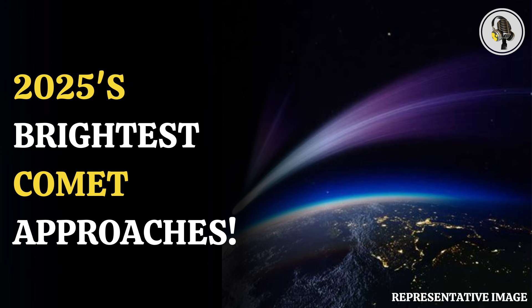In 2024, when Comet A3 travelled to the inside of the solar system, it was spotted by several stargazers in both the southern and northern hemispheres. Comet G3 is expected to become as bright as Venus.